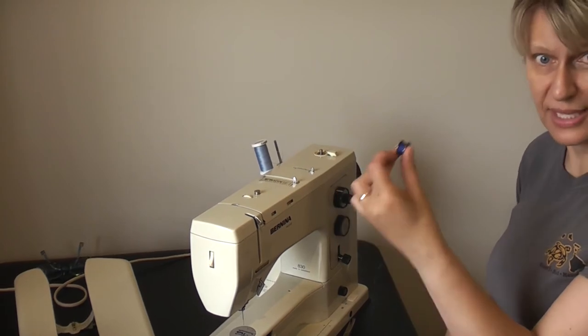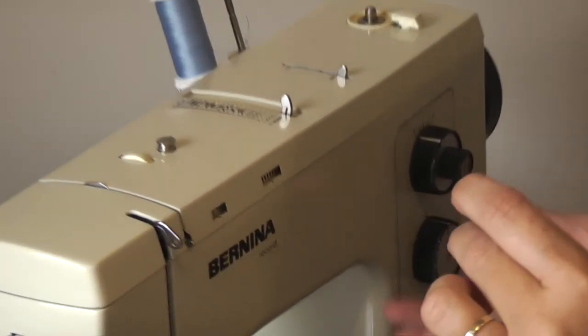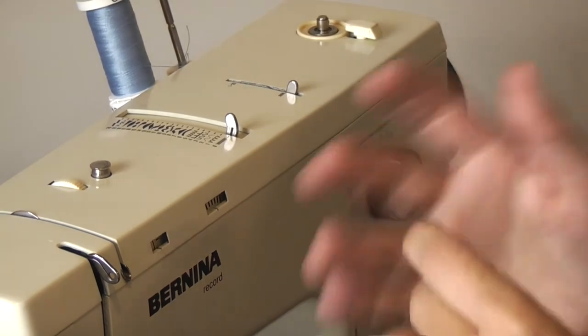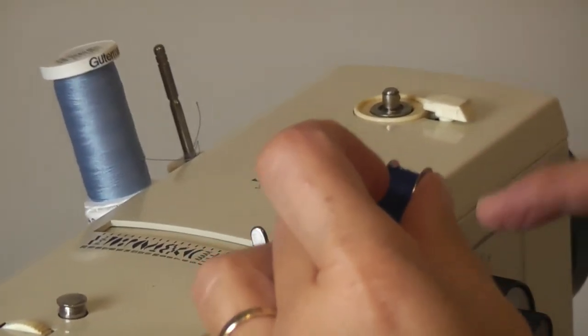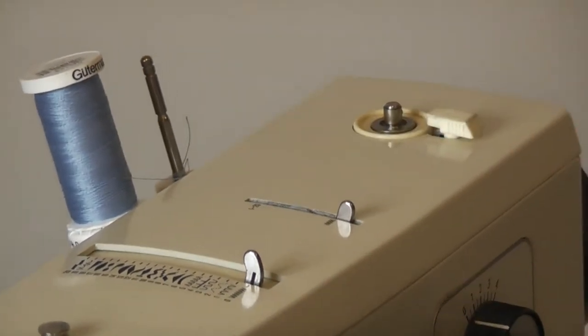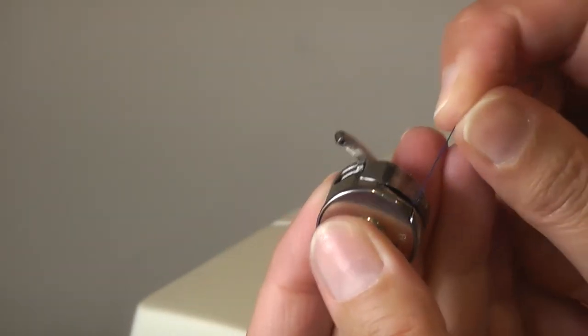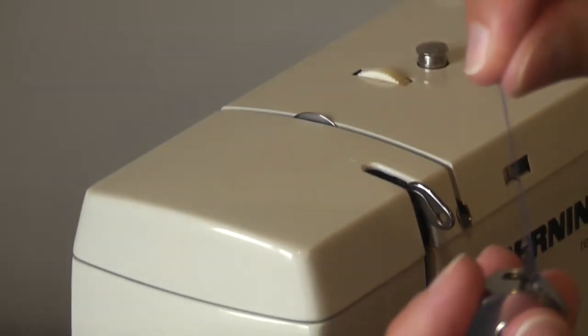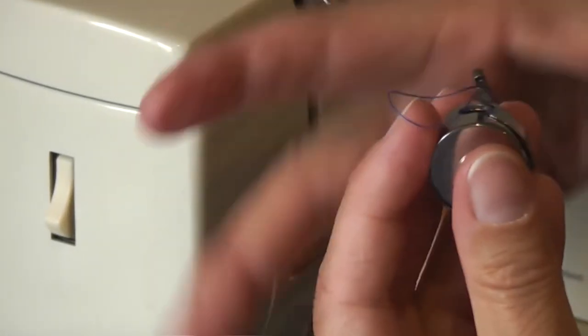So now we have our bobbin that's been wound with thread. Just follow the instructions in your own instruction manual if you have a different type of machine, but I will show you how this one works. We're going to make sure that the cotton, or the thread, is going clockwise. I'm going to put it over my index finger and hold the bobbin like this. There's a little notch just here where I'm going to go through and around until it clicks into place. You can see now the thread is in the bobbin, it's coming out. There's tension on this bobbin.